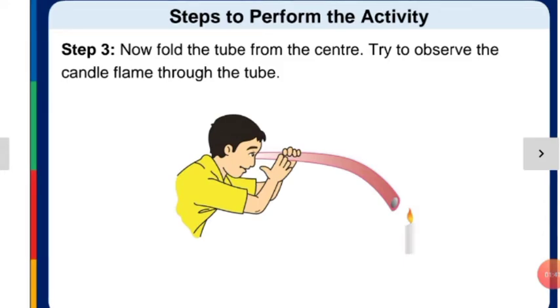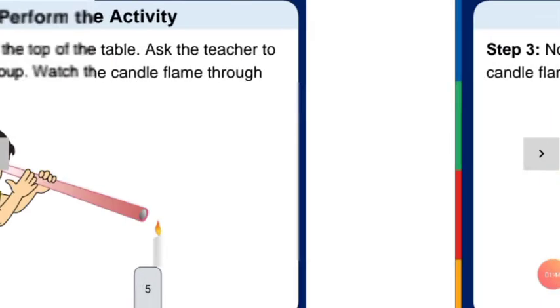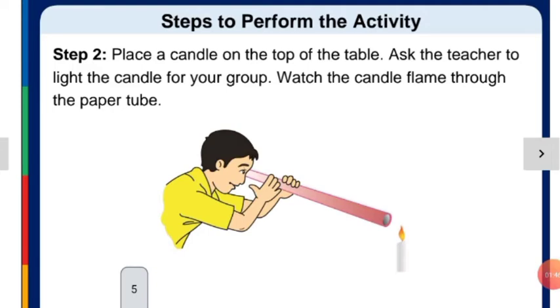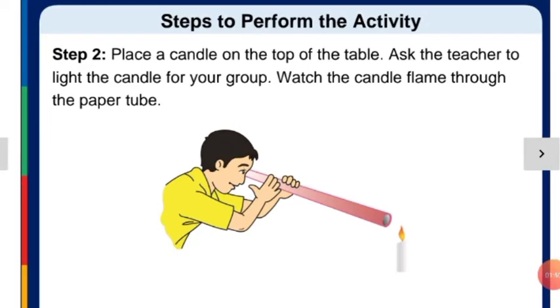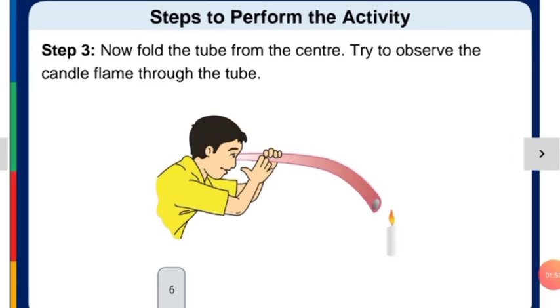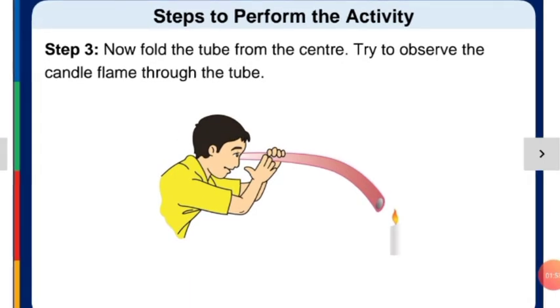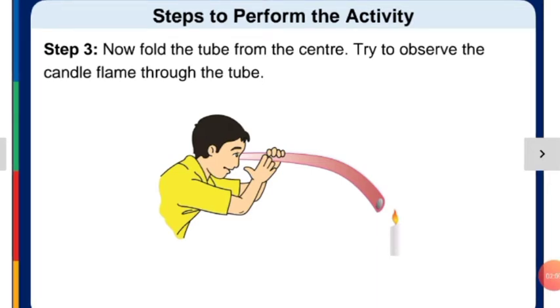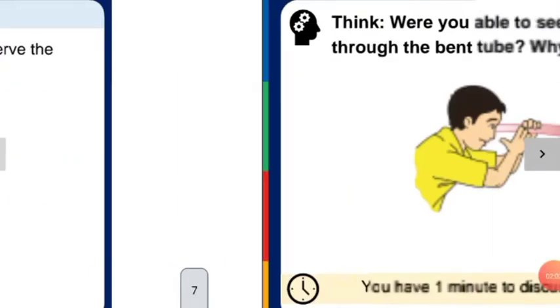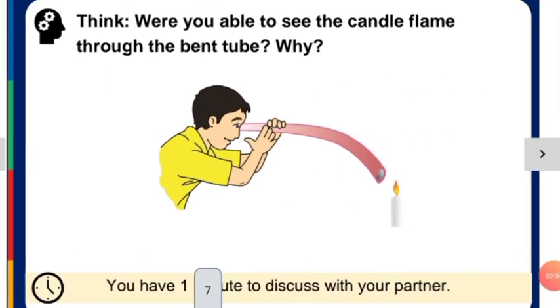In the first figure, you will see the light very clearly. But when you are bending the paper or bending the tube which you have made, try to observe now the candle flame through the tube using the same process.